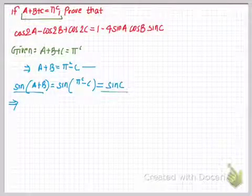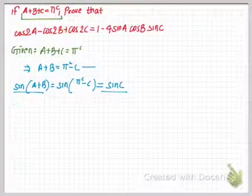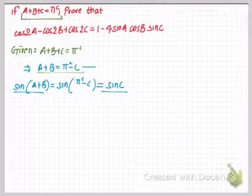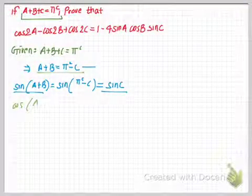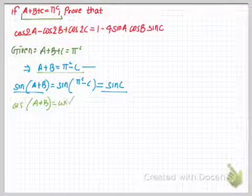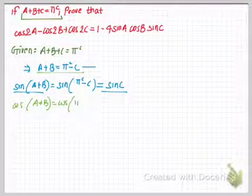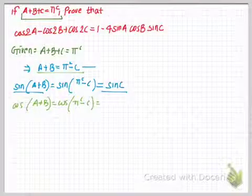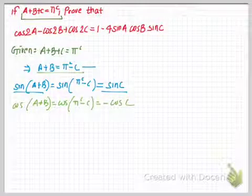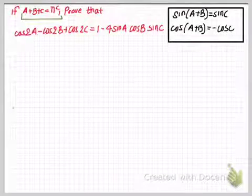We know that sine of (pi minus C) is equal to sine C, so we can say sine(A plus B) is equal to sine C. Now let me operate the same equation by cosine. We have cos(A plus B) is equal to cos(pi minus C), which simply gives minus cos C, since cos(pi minus C) equals minus cos C.